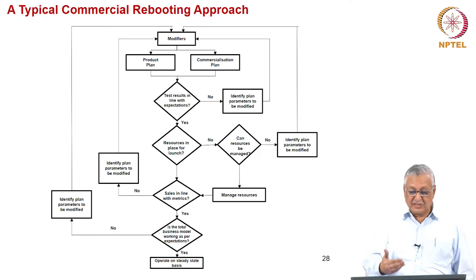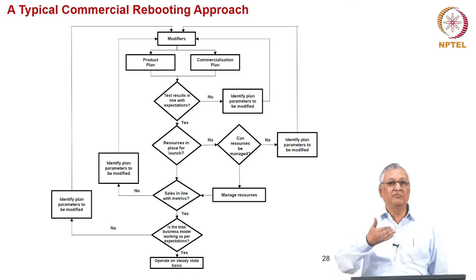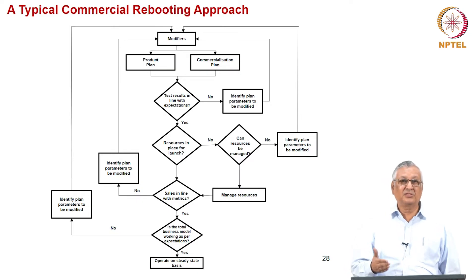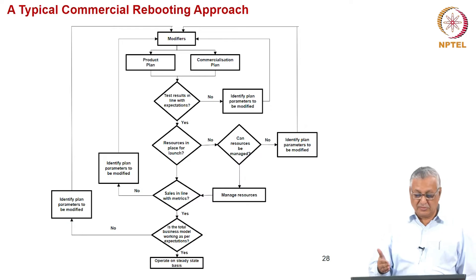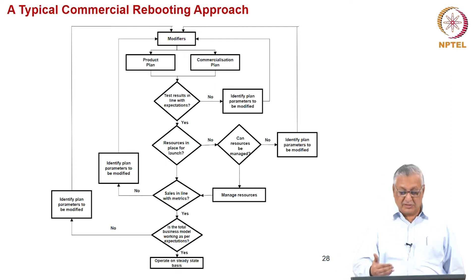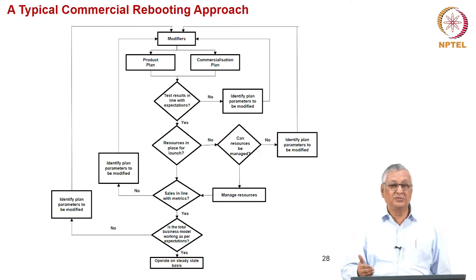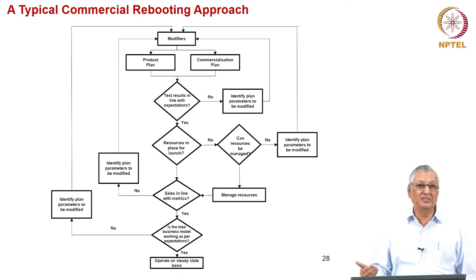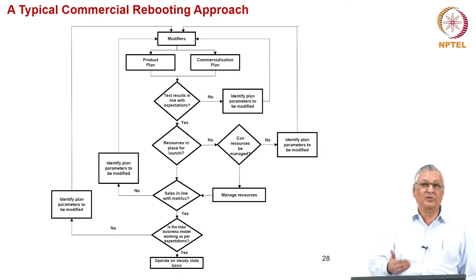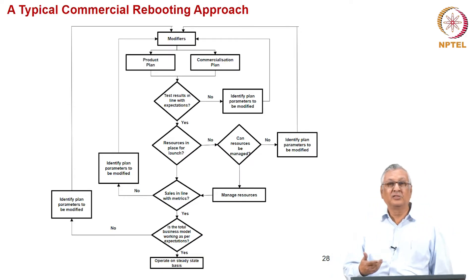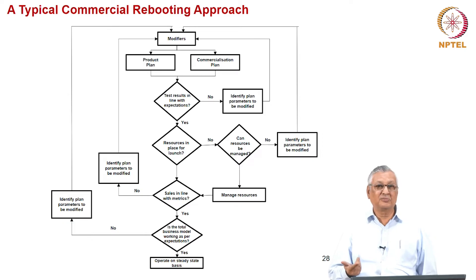If the test results are in line with expectations, we move to the next stage: are we sufficiently resourced? Typically, if you have done a proof-of-concept prototype at a cost of 100, it is expected that to launch commercially you will require 10 times that for the first year launch. If you cannot manage the resources, there is again a need to go back to the product plan and commercial plan. Once you manage the resources, you check whether sales are in line with metrics and identify plan parameters that need to be modified. It is an iterative process because sales often determine the company's valuation — the higher the sales, the higher the valuation, irrespective of profitability.